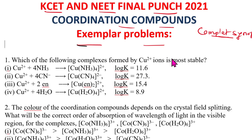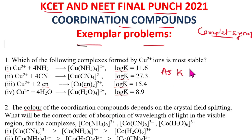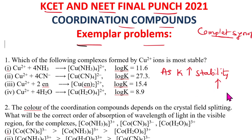First question: which of the following complex formed by Cu²⁺ is most stable? The log K values are given. Always remember, as K value increases, stability is going to increase. Hence the answer for this question is the second one, because the K value is 27.3.